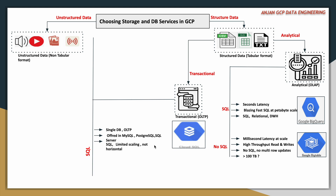In horizontal scaling, which is applicable to distributed data processing systems, you can keep adding nodes horizontally one by one based on your workload. In the case of Cloud SQL, it is a single DB; you can store data up to a few terabytes. It does not support horizontal scalability, and it is offered in different flavors — MySQL and PostgreSQL — and you can query this database using SQL. If you need a SQL database with a single DB and vertical scaling capability, you can go for Cloud SQL.